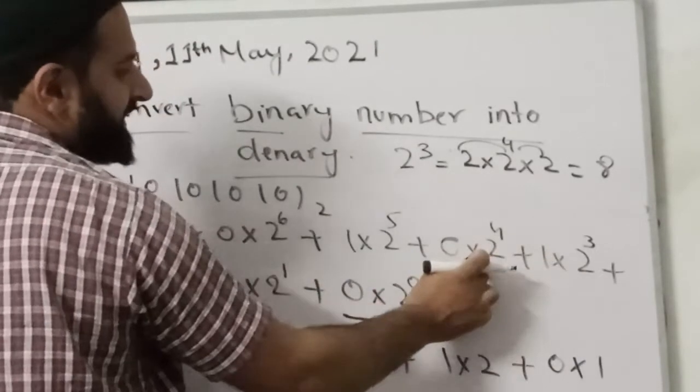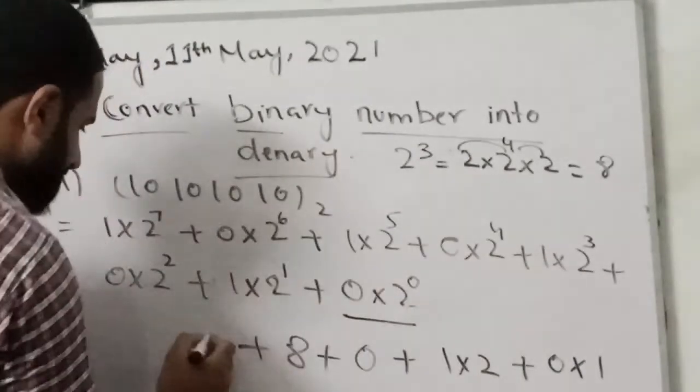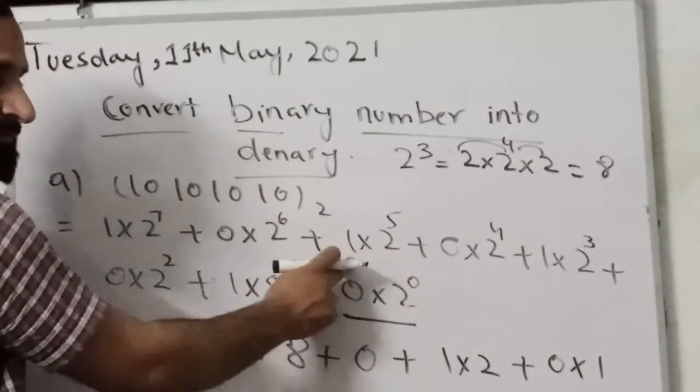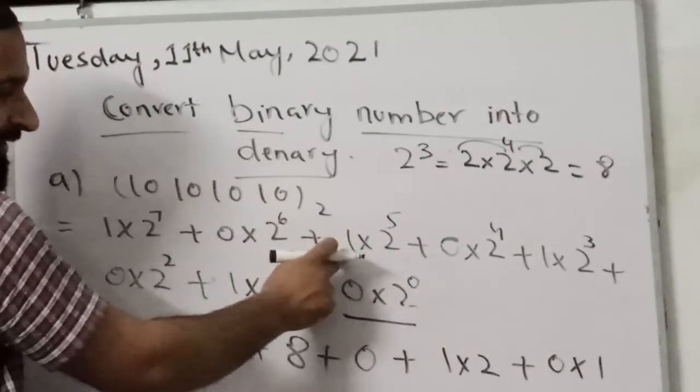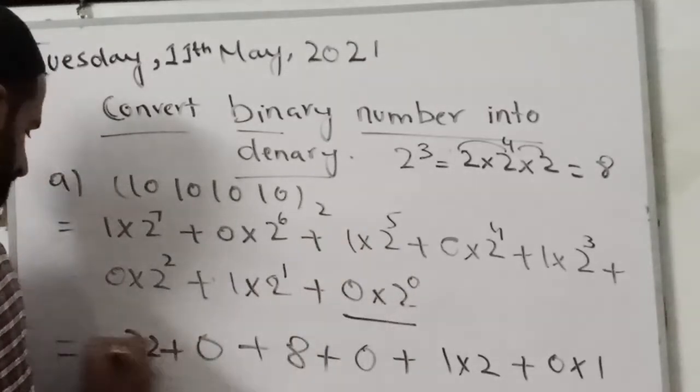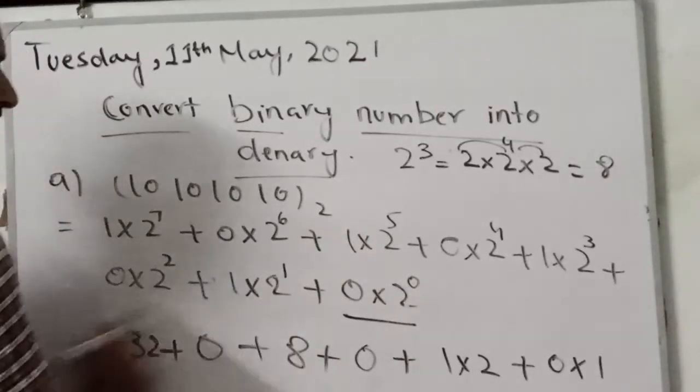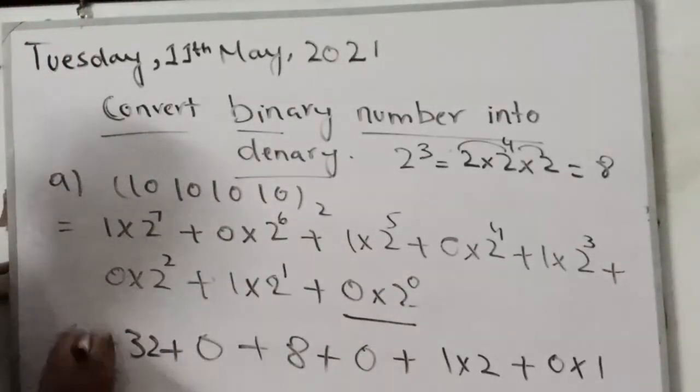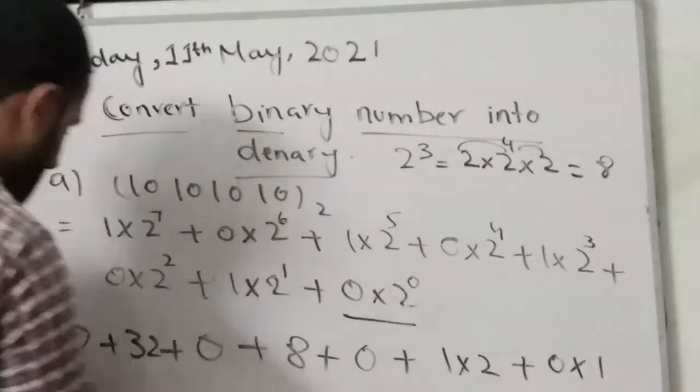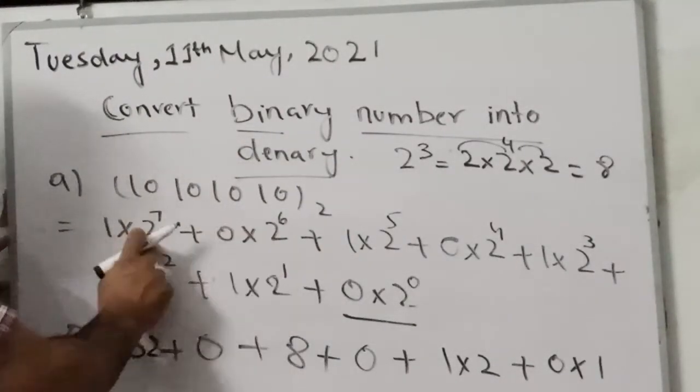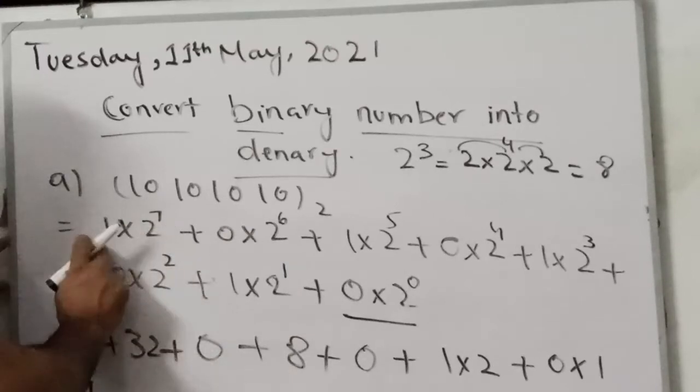2 to the 4th is 16, 16 times 0 is 0. Then 16 times 2 are 32, 32 times 1 is 32. Then here 32 times 2 are 64, 64 times 0 is 0. Then 64 times 2 are 128, and 128 times 1 is 128.